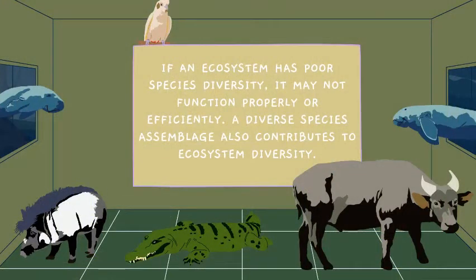If an ecosystem has poor species diversity, it may not function properly or efficiently. A diverse species assemblage also contributes to ecosystem diversity. Understanding species diversity is very important because without it, it would be hard for organisms to work together effectively.